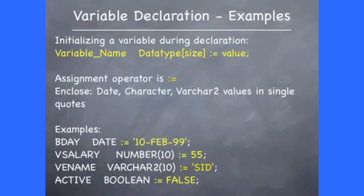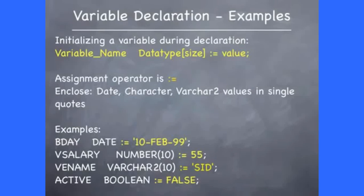Here you are looking at initializing a variable during its declaration. Storing a value into a variable is done using the assignment operator, which is a colon followed by the equal sign. When initializing a variable with a value during its declaration, you specify the value after the assignment operator. Date, char, and varchar2 variables should be enclosed in single quotes. For example, bday is declared to store date values with an initial value of 10th of Feb 1999; vsalary stores the value 55; vename stores the value 'sid'; and active stores the value false. Note that the value false is not enclosed in single quotes.